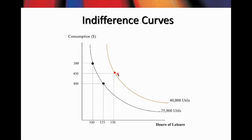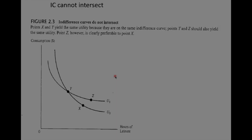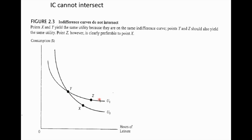Notice that the point on the higher indifference curve is better than the other two points, because at that point this worker has a much higher level of utility — 40,000 utils compared to 25,000 utils. At the higher point, this worker works fewer hours with 150 hours of leisure per week and $450 of consumption. In indifference curve analysis, the higher the indifference curve, the higher the level of utility. Indifference curves must not intersect.